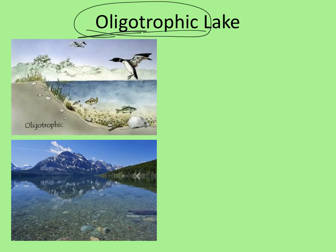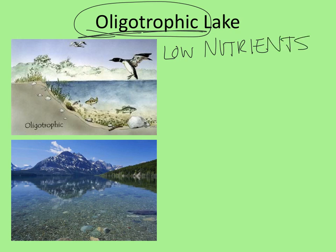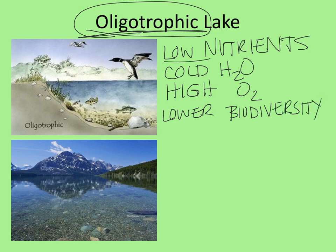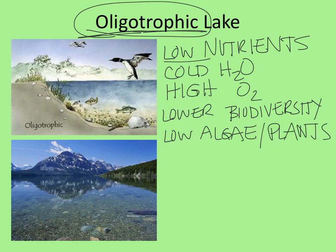Let's start with the baby lake — oligotrophic. 'Oligo' means low and 'trophic' means food, so there are low nutrient levels. This lake started as a big chunk that fell off a glacier, melted, and turned into a lake. That water is going to be cold, and cold water holds lots of dissolved oxygen — so there's plenty of oxygen for living creatures. Generally though there's not a ton of biodiversity yet, because it's a baby lake without many nutrients. Low nutrients means low algae and plant growth.